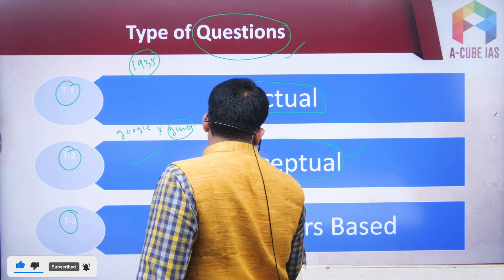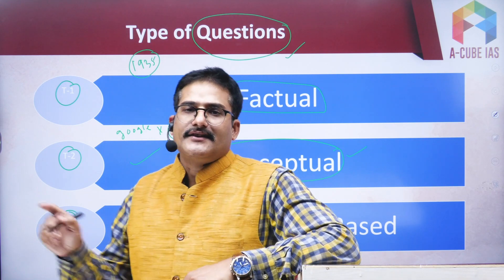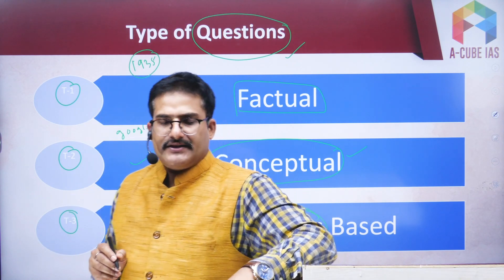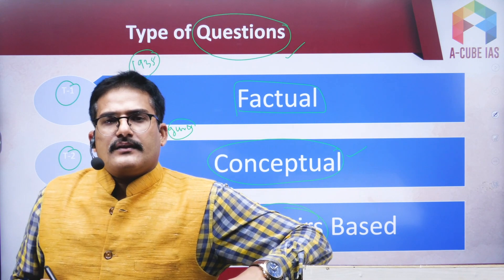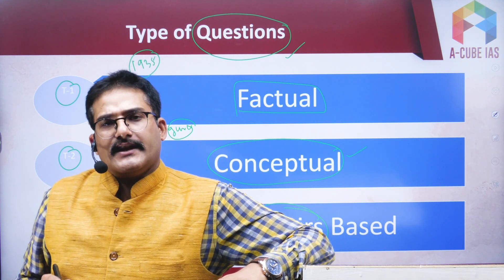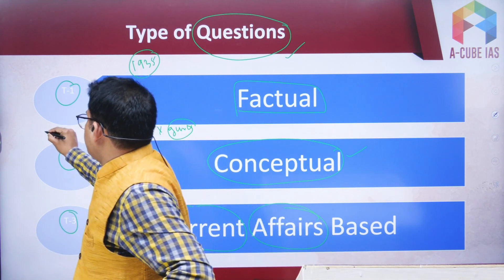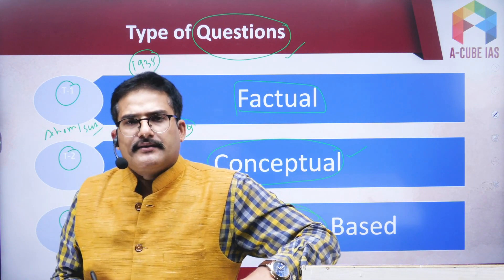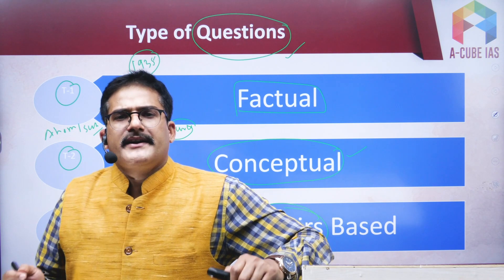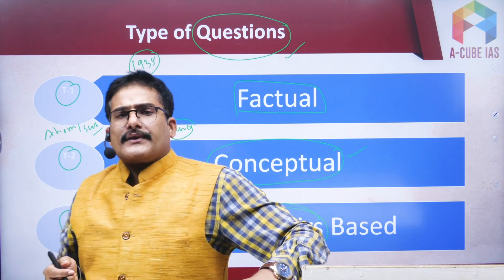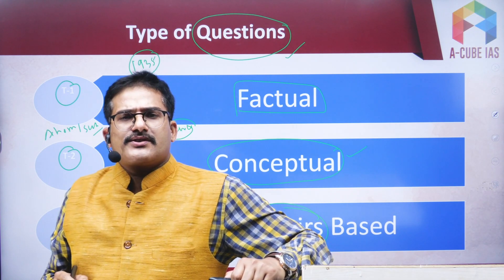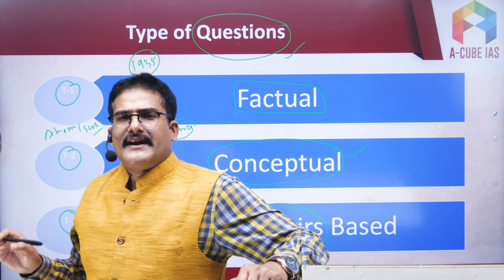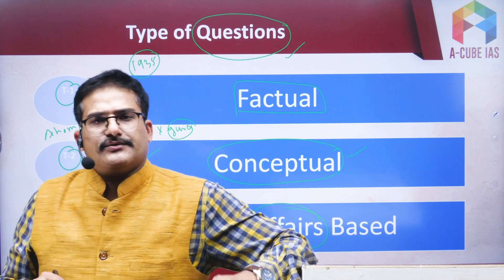The third type is an oxymoron — UPSC also asks questions from current affairs in the history section. For example, UPSC asked about Suhaldev, or the Homi Dynasty, or the Vijayanagar Empire, or the Cholas, or the Pandyas. UPSC never asks a question out of the blue — there is always a logic behind every question they ask.